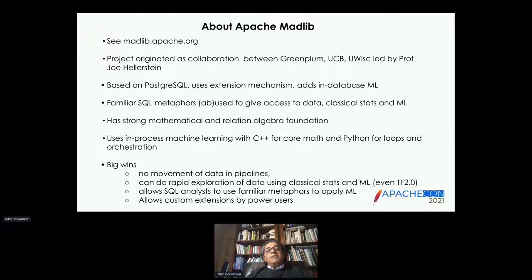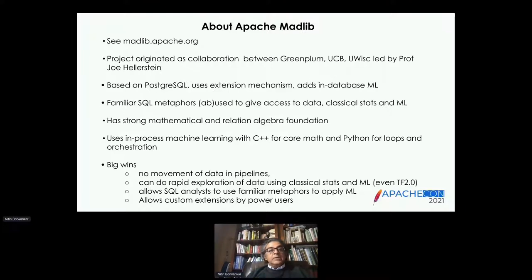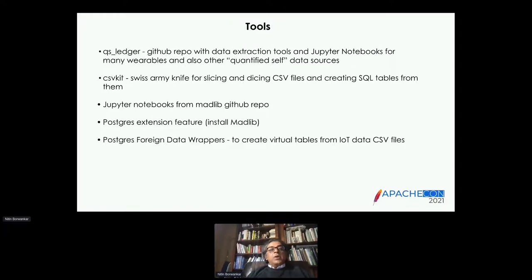Madlib is built on a strong formal foundation. It uses a lot of C++ algorithms and matrix algorithms to do hardcore machine learning. It uses Python to orchestrate everything. The big thing is that you have the data there — you don't have to move the data around. You don't have a lot of overhead. And with this project, we take it a step further: we don't even have to import the data from CSV files into tables — you can create virtual tables right on top of the CSV files.